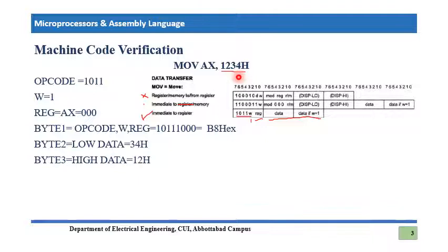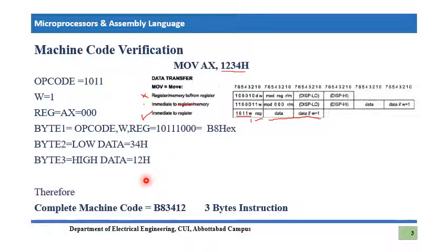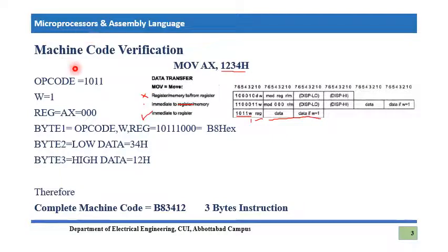Byte 3 is the higher byte of the immediate data, which is 12h. So the complete machine code is B8 34 12 hex, and this is the same code we saw in the emulator. In this way one can verify each machine code conversion — I just took one example to show you.